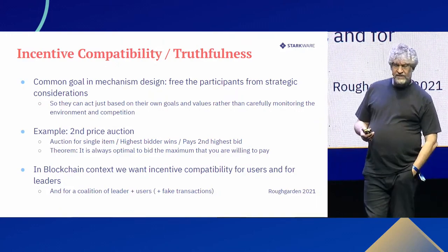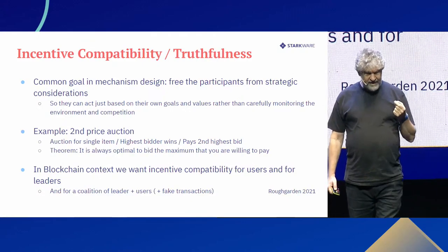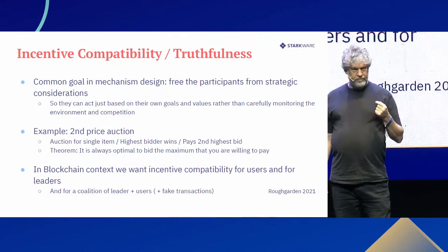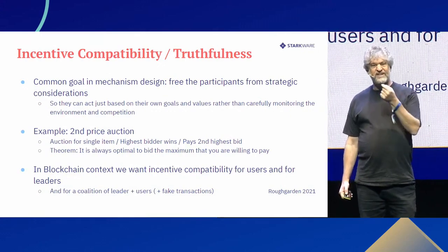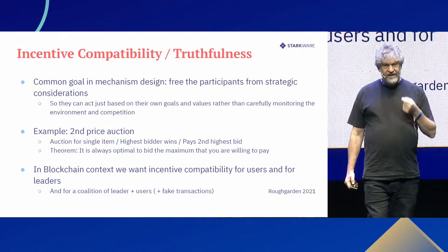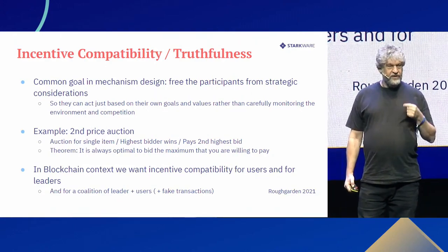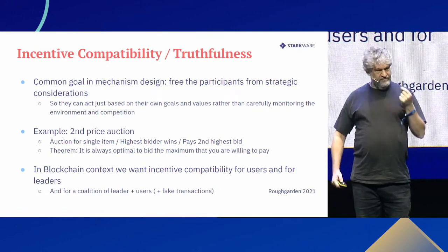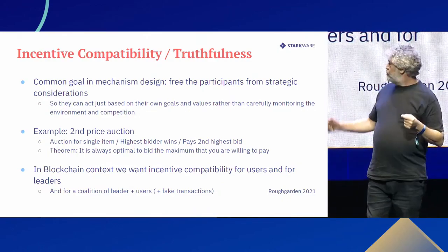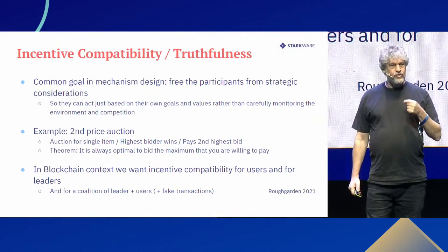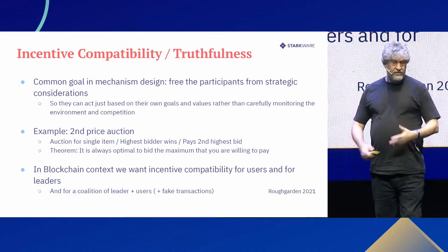The classic example of such incentive-compatible design is the second-price auction. When selling a single item, the highest bidder wins, but is charged only the second-highest price — the highest competition. The logic is that this is the smallest amount needed to win. If you bid less than the second price, you don't win. This is a provable mathematical theorem: if you charge the second-highest price, no one ever has reason to manipulate. Everyone simply bids their true maximum willingness to pay.